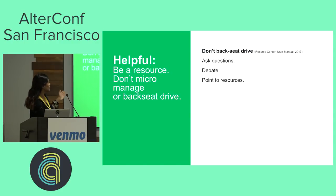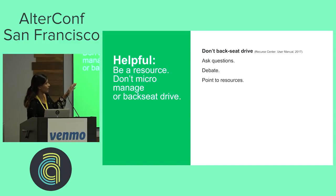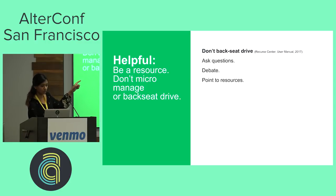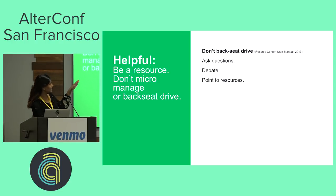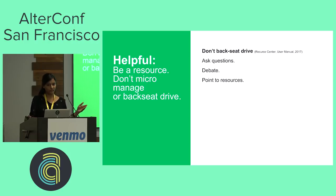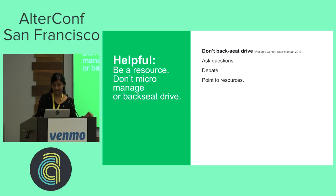For pair programming specifically — don't backseat drive. I got this from one of Recurse Center's social rules. Always ask questions, debate, and point to resources. Remember that you're there to collaborate and not to have this person execute your directions. For review seekers: respond to every comment even if you don't plan to apply the feedback. Provide a quick note letting them know why you aren't going to incorporate their feedback or that it might be out of scope. Don't ignore those who take the time to help you.